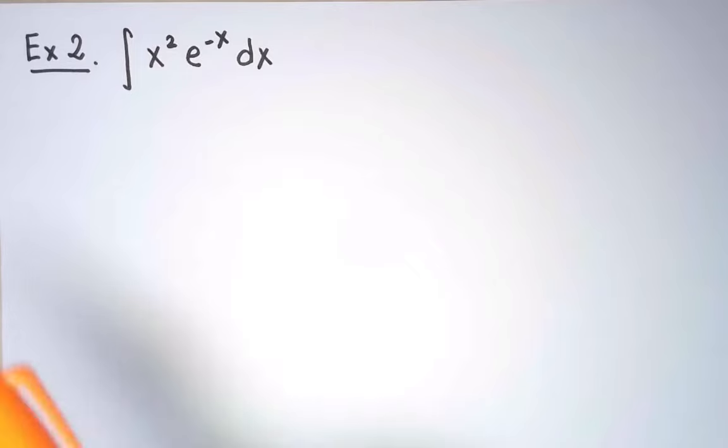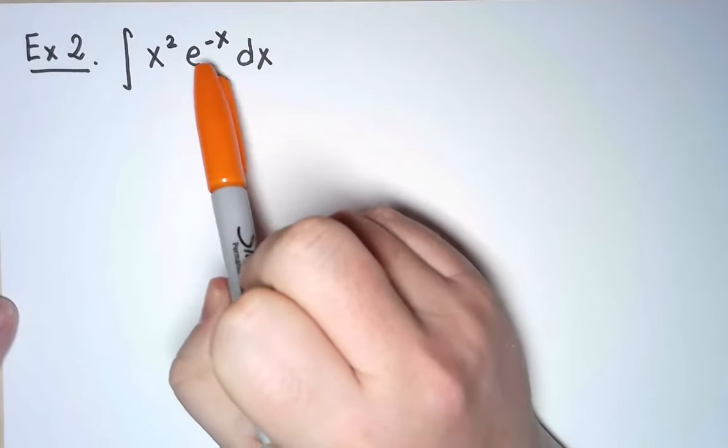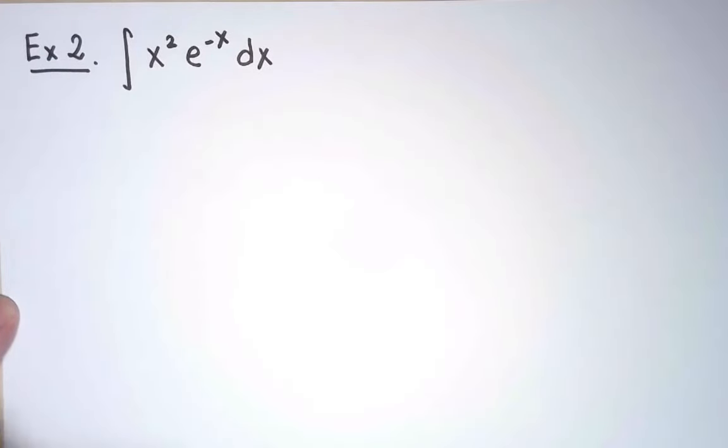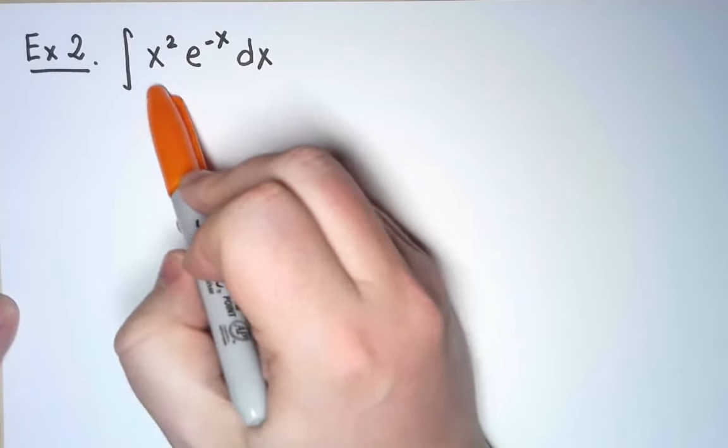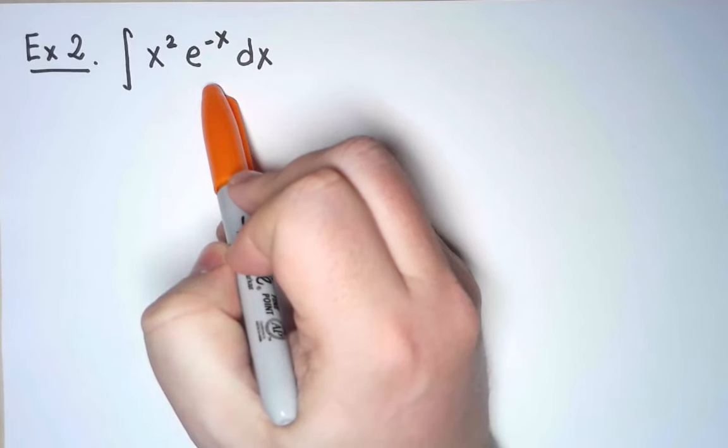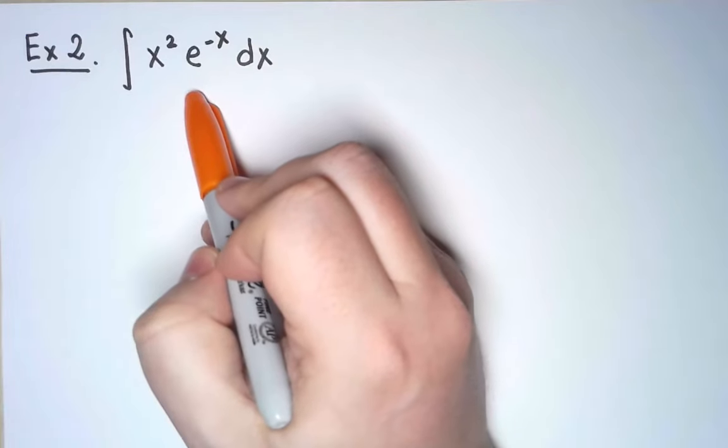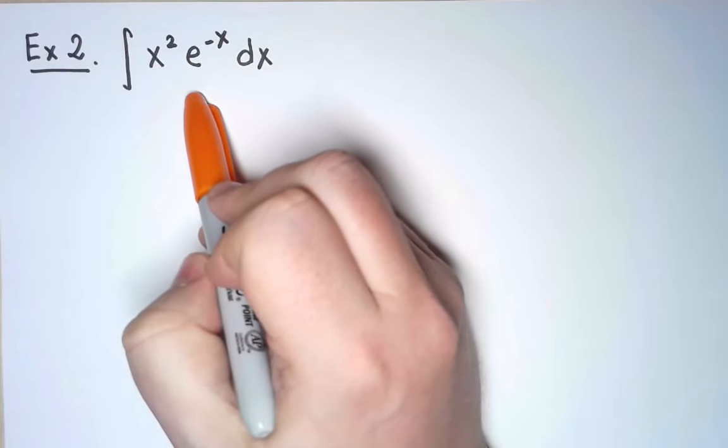For my second example, I want to integrate x squared times e to the minus x dx. I will use integration by parts, so I need to think of this function as a product of two pieces, and for the transformed integral, I will use the derivative of one of them and the antiderivative of the other.